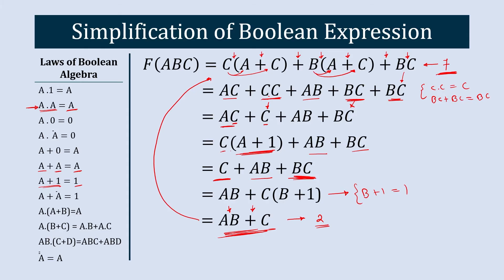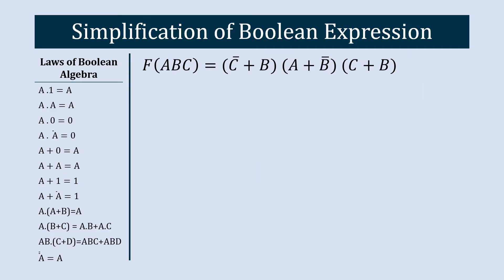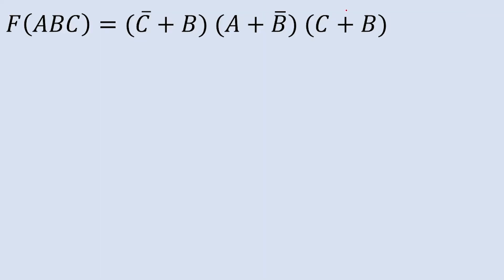This is the second expression to simplify, which is a bit more complex than the previous one. First, let's count how many gates are needed to implement it: OR gate, AND gate, NOT gate, OR gate, AND gate, OR gate, NOT gate — one, two, three, four, five, six, seven. We need seven gates.